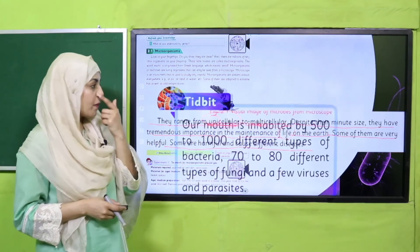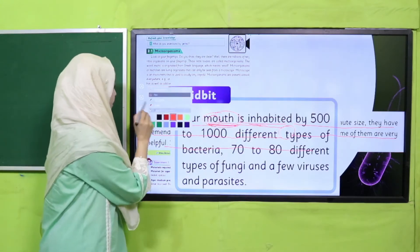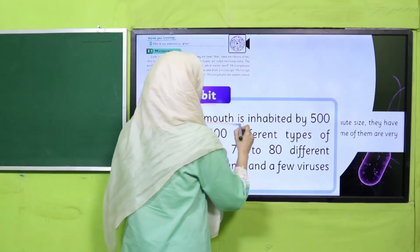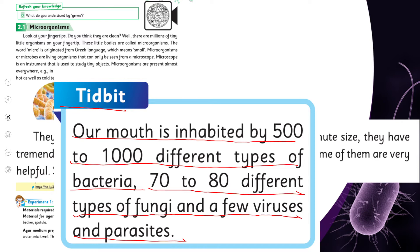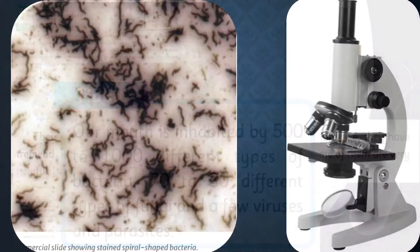Here are some tidbits. Our mouth is inhabited by five hundred to two thousand different types of bacteria, seventy to eighty different types of fungi, and a few viruses and parasites. So inside our mouth there can be five hundred to one thousand or two thousand microorganisms — they can be viruses, fungi, and different parasites. So microorganisms are present everywhere around us.